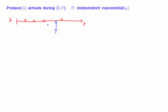How can we answer this question? There are two ways: one is using mathematical manipulations, the other is using intuition. Let's see what it would take to solve the problem using formulas. We call N_T the number of arrivals until time T in our Poisson process, and we wish to find the distribution of N_T — specifically, the probability that N_T is equal to some value k.